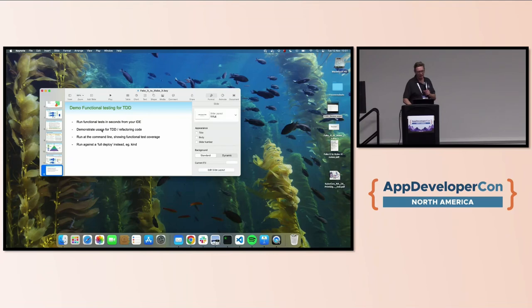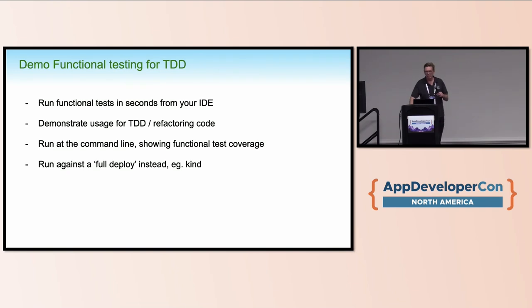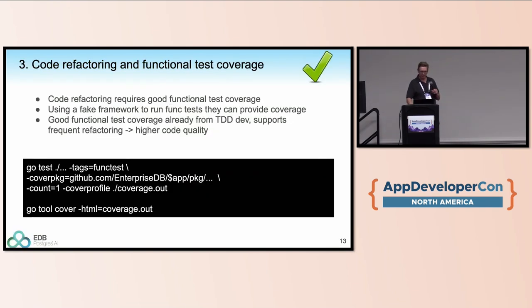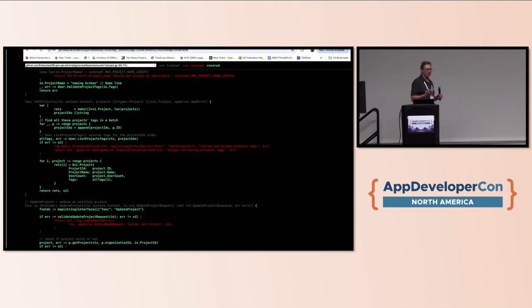For coverage, it's just a standard Go command-line thing. You ask for coverage when you run the tests, get an output file, then run another Go tool to generate the coverage report. Here are the commands — this checks you're covering all the code in your project and highlights every line of code that's been functionally tested, giving you good test validation.